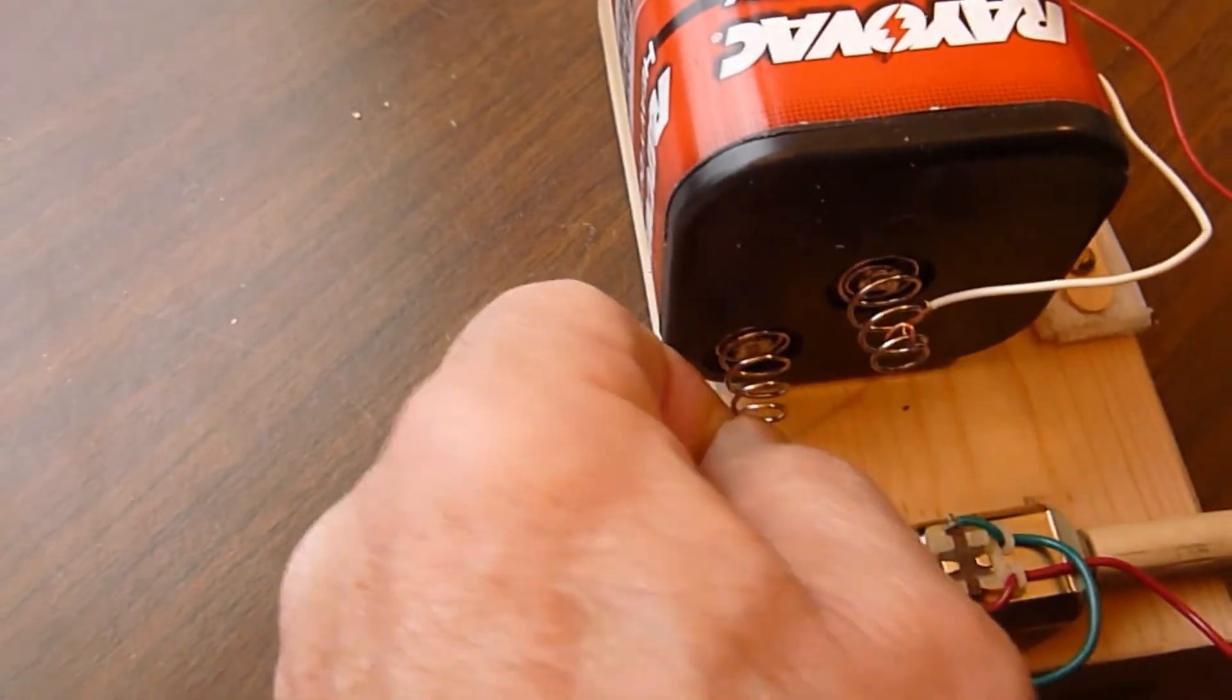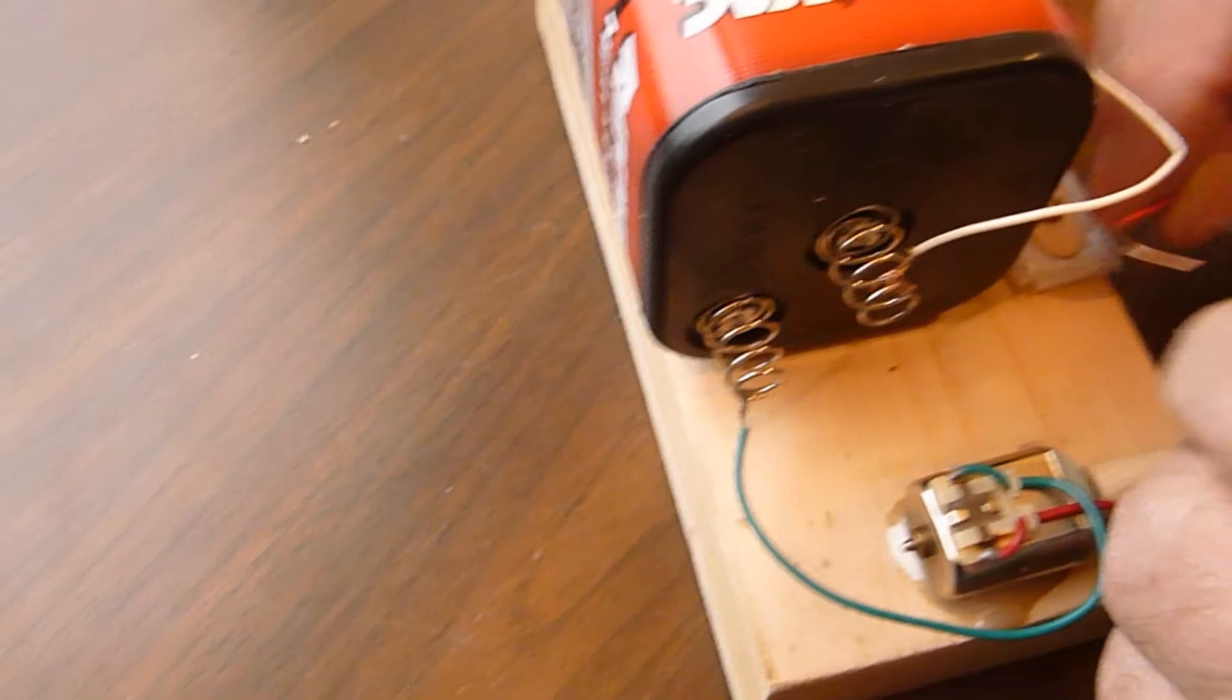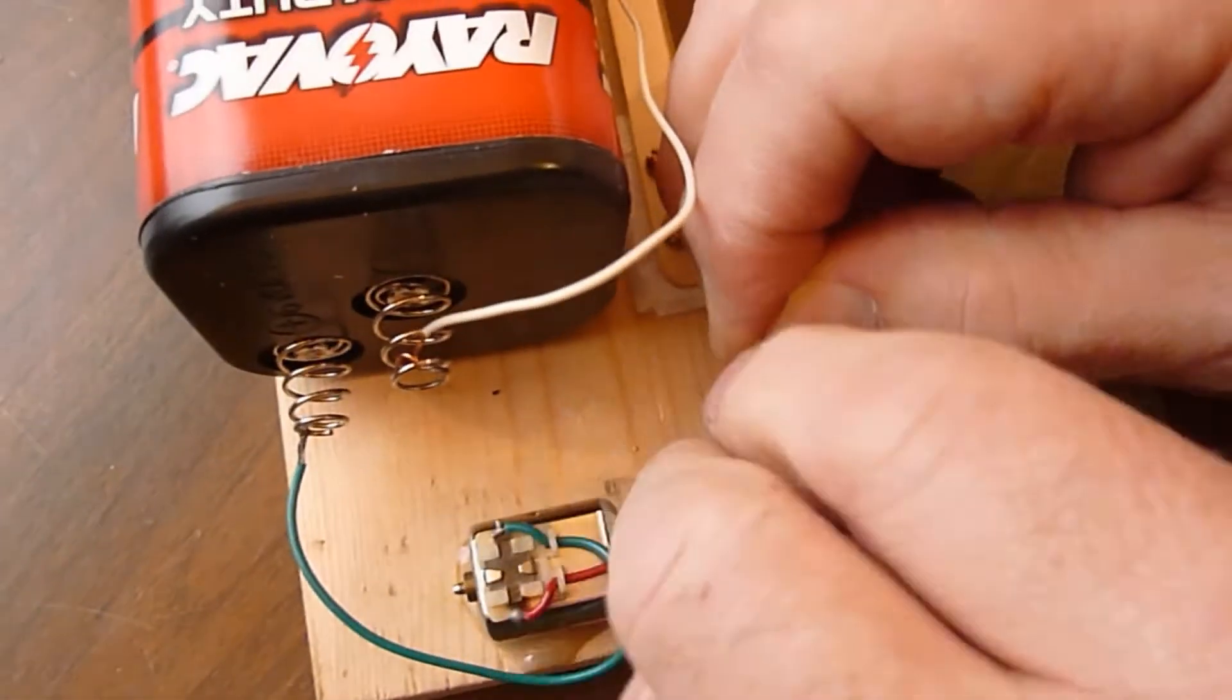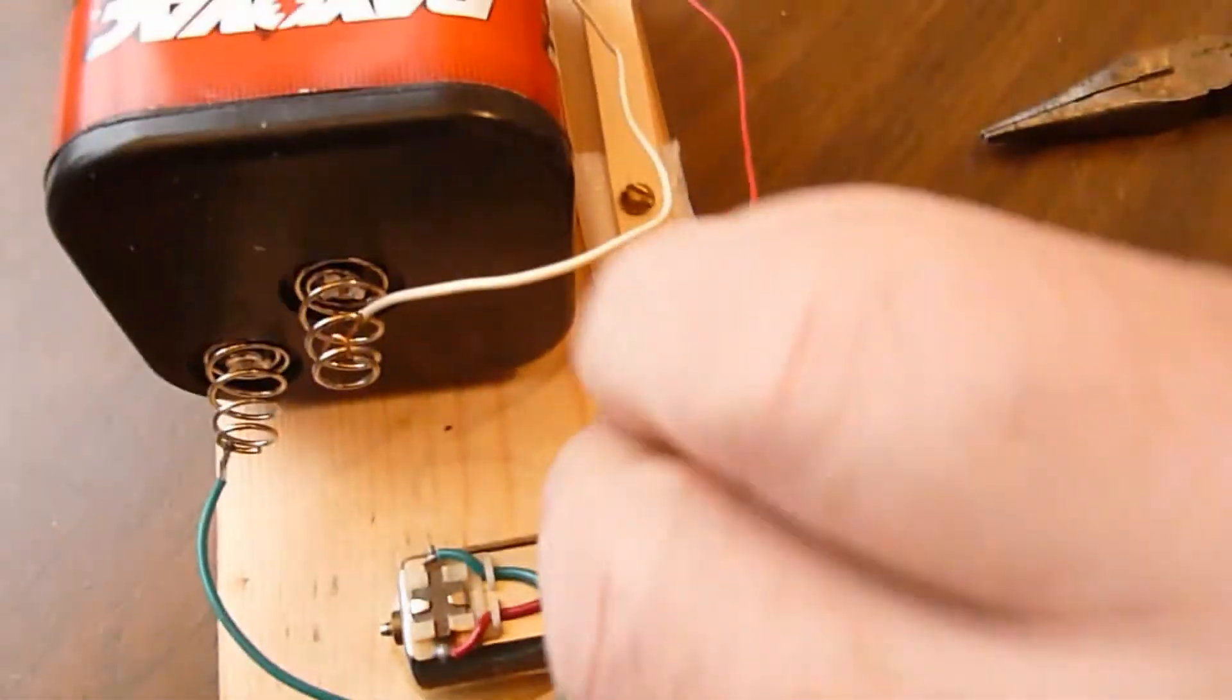To complete the wiring, all we need to do is connect the other lead from the motor to the other lead of the popsicle stick switch.